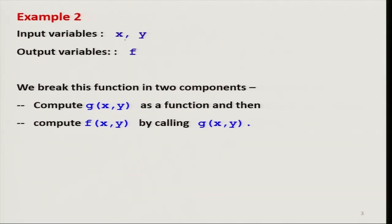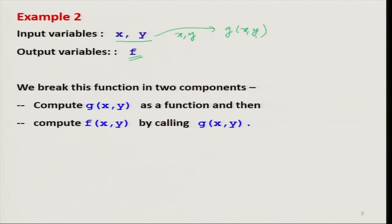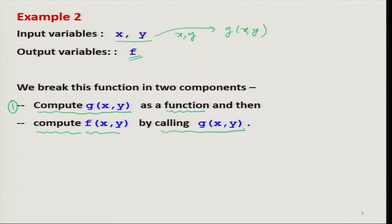In this example you can see we have two input variables x and y, which can obviously be some data values, and the output variable is f. This f depends also on a function of x and y — namely gxy — but as an indirect dependence. So we try to break the entire function into two components.